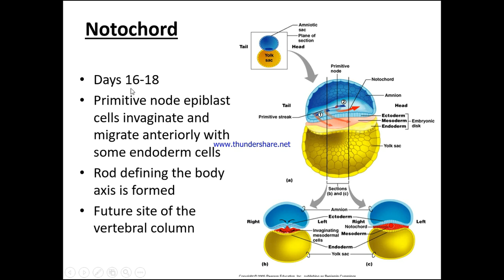The notochord: at day 16 to 18, primitive node epiblast cells invaginate and migrate anteriorly along with some endoderm cells, forming a rod that defines the body axis. This is going to be the very important site of the future vertebral column. Here we can see the amniotic sac, a plain section of the head, the primitive streak and node, the notochord, and the amnion. We have the embryonic disc showing the ectoderm, mesoderm, endoderm, and the yolk sac.